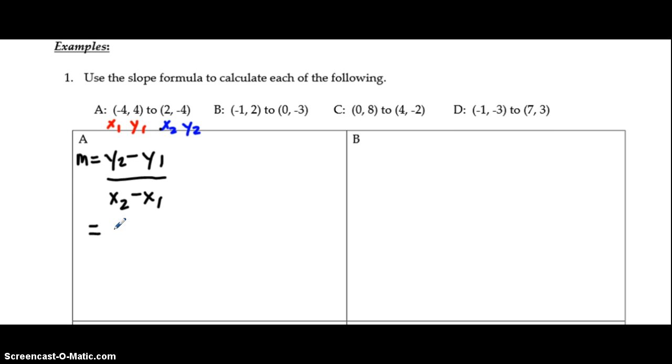Substituting our values in one at a time, y2 is negative 4 minus y1 which is positive 4 all over x2 which is 2 minus x1. When we're subtracting a negative number we could do one of two things. Either write it as minus a negative throwing that negative in brackets or if you're comfortable changing that automatically to a plus sign, because when we subtract a negative it's the same as adding a positive. Negative 4 minus 4. Simplify at the top we get negative 8. 2 minus negative 4 is like adding so 2 plus 4 and we get 6. Reduce to lowest terms negative 4/3 is the slope for that first line.